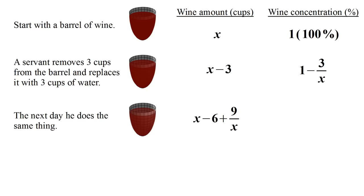Once again, the total volume of liquid remains at X because the servant is replacing the wine that he removes with water. So the concentration of wine will be this amount of wine divided by X. We can then divide through, and we can factor this term. We end up with a concentration of one minus three over X, the quantity squared.